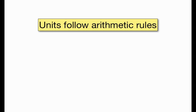One key concept about units is that they follow the same rules of arithmetic that quantities do. For example, if I'm going to multiply two quantities together and they have units for them, I'm also going to multiply the units together.